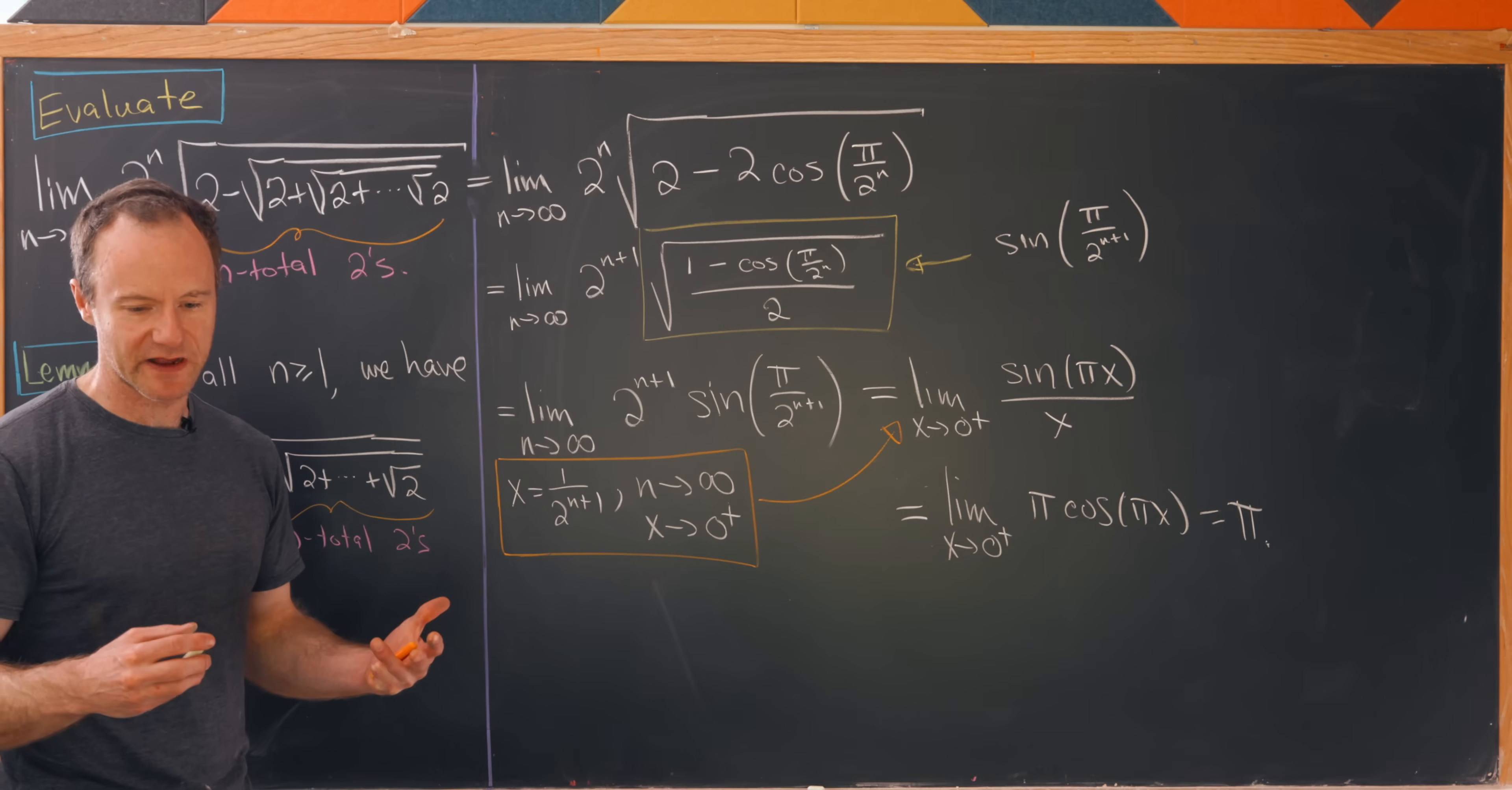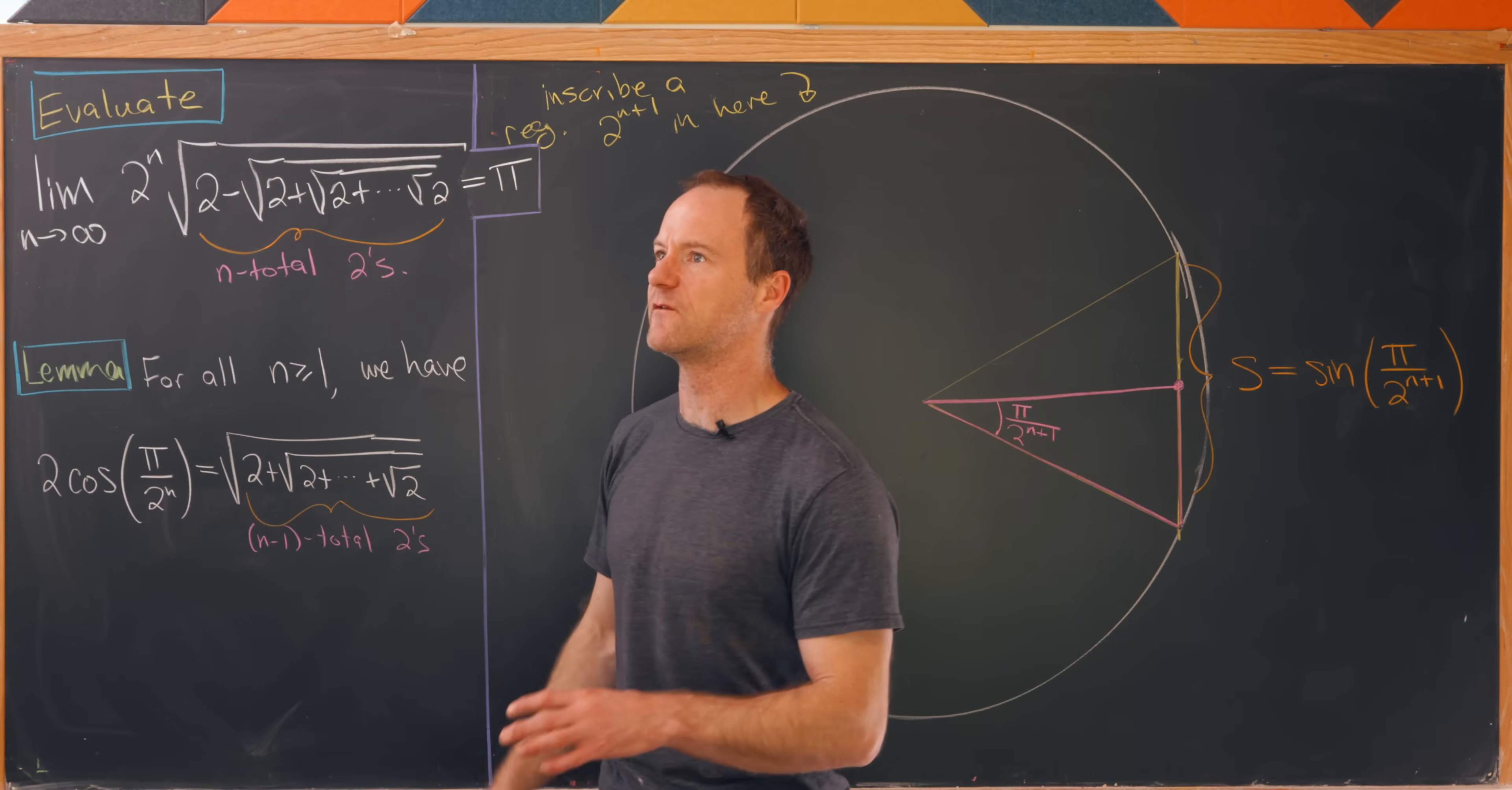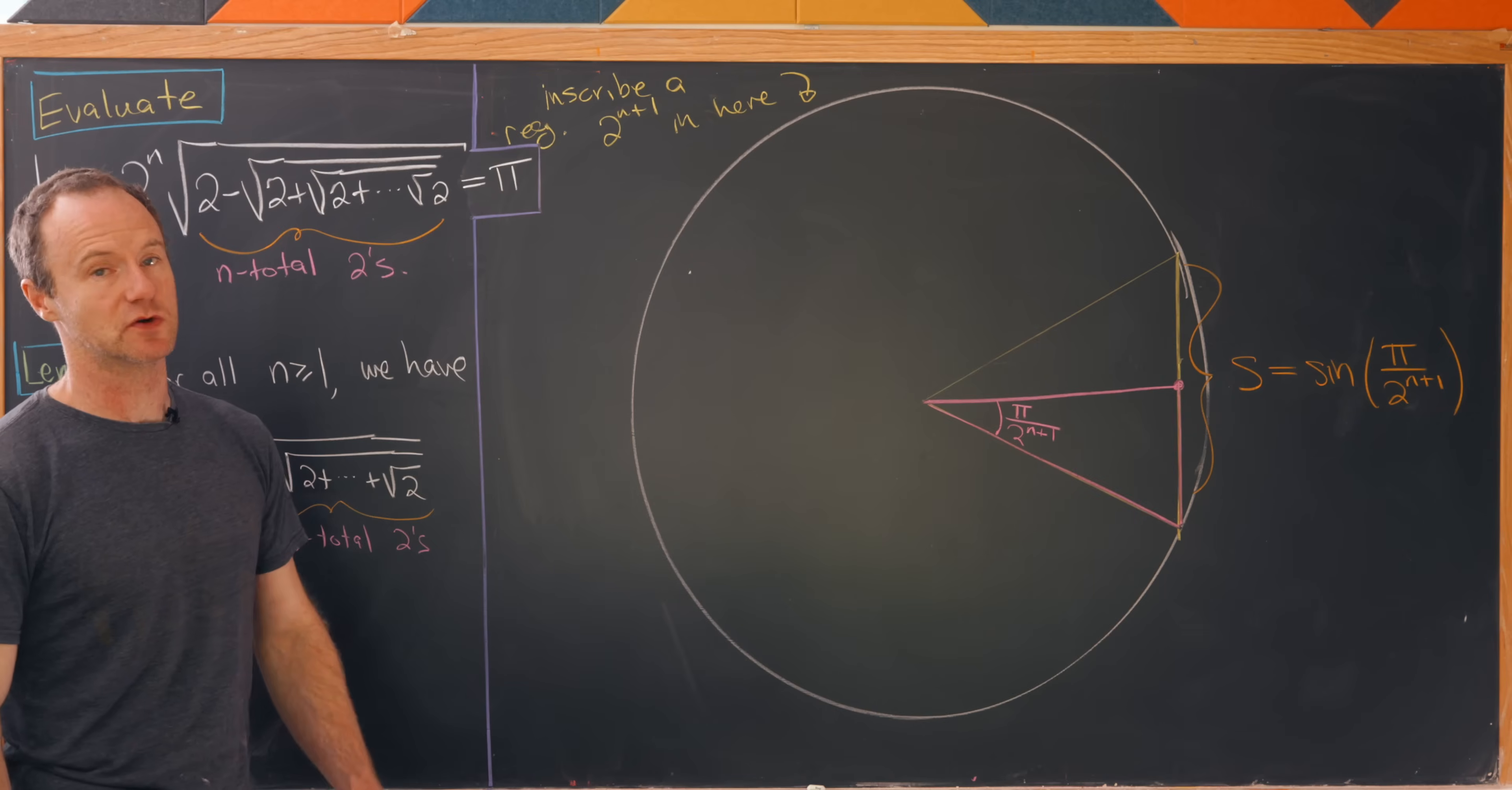We've just evaluated our limit but we didn't really uncover any of the geometry. So we'll end the video by talking about the underlying geometry of this situation. We just got done showing that our goal limit is equal to pi, and we did by writing this in the form limit as n goes to infinity of 2 to the n plus 1 times sine of pi over 2 to the n plus 1. But I'd like to take another look at this more geometrically.